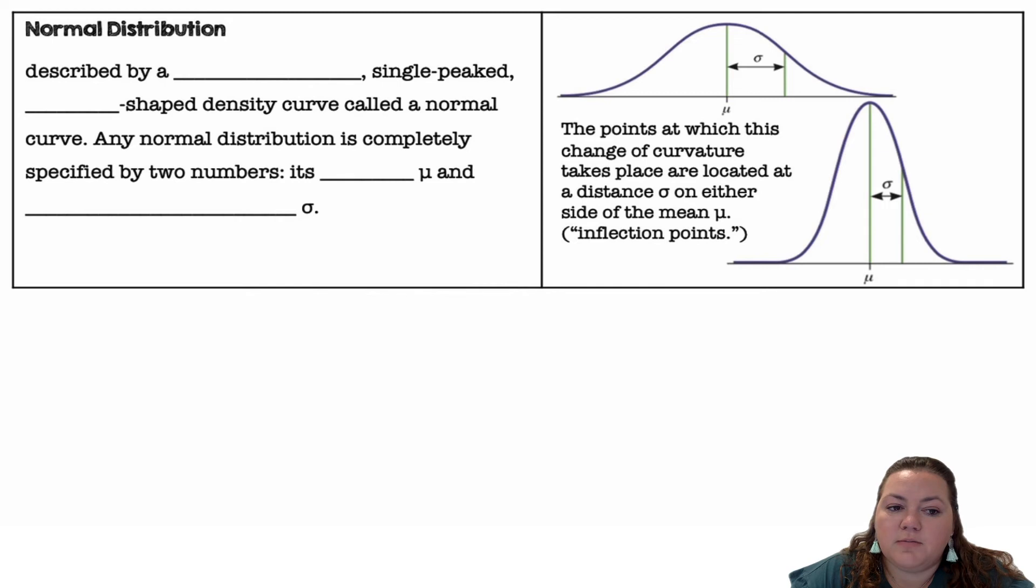A normal distribution is described by a symmetric, single-peak, bell-shaped density curve called the normal curve. Any normal distribution is completely specified by two numbers: its mean, mu, and its standard deviation, sigma. These are normal distributions on the right here. The points at which the change in curvature takes place are located at a distance, sigma, on either side of the mean. Those are your inflection points.